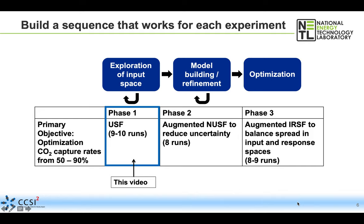In this video, we're talking about phase one—exploring the input space—and we're going to use a uniform space filling design. We have a budget of 25 runs, allocated approximately equally: in phase one we're going to use nine to ten runs, depending on what the designs look like, and then we'll allocate the rest of the budget to phases two and three equally.